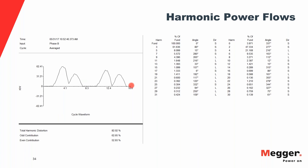Looking at a power waveform, on the right you can see the individual harmonic contents in the power waveform, with columns for phase angle and direction. Direction is either S (source to load) or L (load to source), determined from the phase angle difference. The fundamental phase angle is zero, and all other harmonics are compared relative to the fundamental.